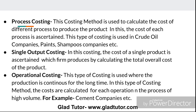The next type of costing is single output costing. In this type of costing, the cost of a single product is ascertained — a firm that produces one product calculates its overall total cost. This is used where you need to find out the total value cost of one product. In this type of costing, costs are calculated for each operation in the process of high volume.